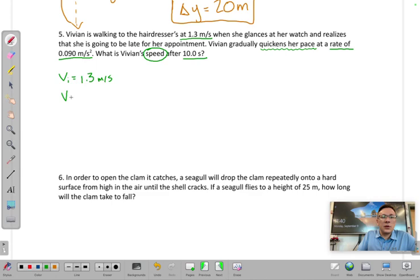And then we know that we are solving for her final velocity, so I'll go ahead and put that in as the question mark. We were given the acceleration value, 0.09 meters per second squared. And then the time we were given, that is 10 seconds.